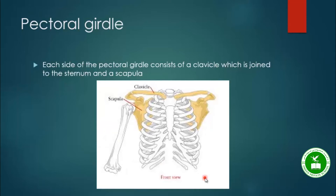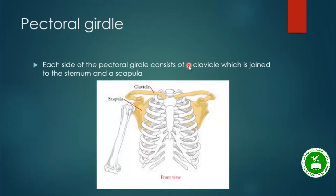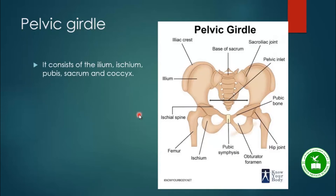The trunk also contains the pectoral girdle and pelvic girdle. The pectoral girdle is present on each side and is composed of two bones: the clavicle and the scapula. The pelvic girdle is composed of the ilium, ischium, pubis, sacrum, and coccyx bones.